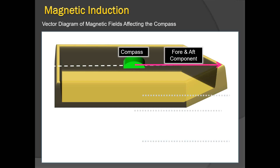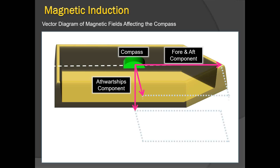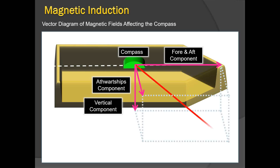So the ship itself becomes like a compass — the ship develops a fore-and-aft component of magnetism, an athwartship component, and a vertical component. All three together give you the total resultant magnetic field of the vessel.